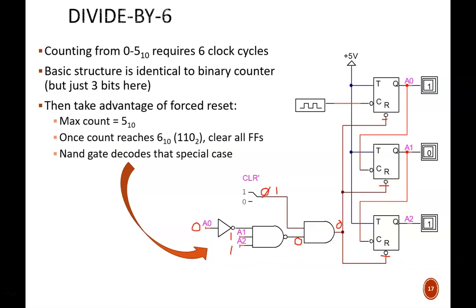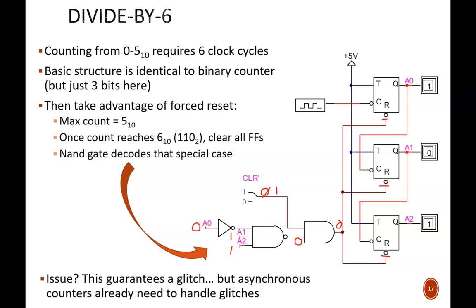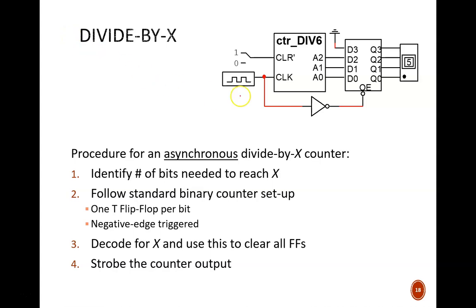At first, this sounds like a poor design. We are letting the counter reach an invalid state. But that brief invalid time is just a glitch, and we have already seen that glitches are pervasive in asynchronous counters already. We can handle that glitch just like before, with the help of a strobed tri-state buffer, as you see here.